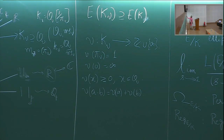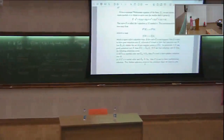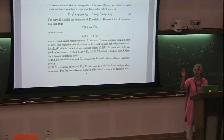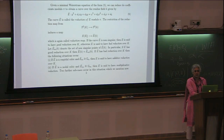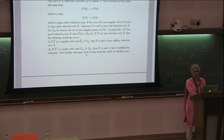The valuation v(Δ) encodes information about the kind of reduction. This is analogous to how in algebraic number theory a prime P ramifies in K if and only if P divides the discriminant of the number field. So the discriminant's valuation is the generalization of that idea to the elliptic curve setting.